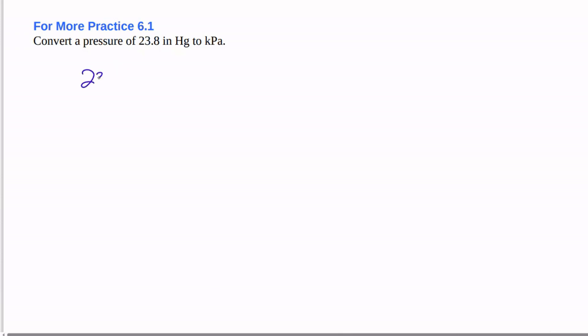So I'm just going to work this one directly. It's worked in the same way. 23.8 inches of mercury, and one atmosphere is 29.92 inches of mercury. And 101.325 kilopascal is 1 atmosphere.